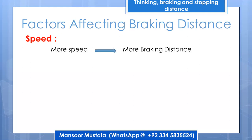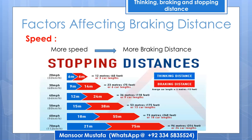Now let's discuss factors that affect braking distance. Again, the first factor is speed. The greater the speed, the greater the braking distance, because higher speed requires more time to decelerate. You can observe from the case study that as speed increases, both thinking distance and braking distance increase. Speed is therefore a major factor affecting emergency braking.